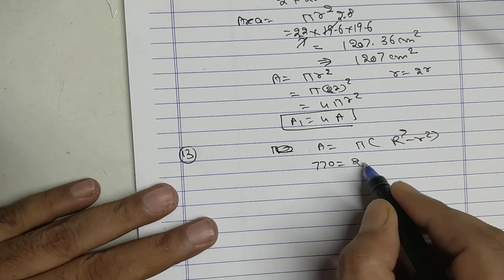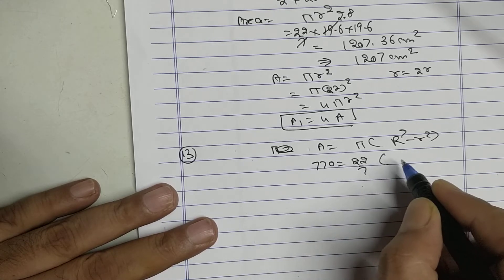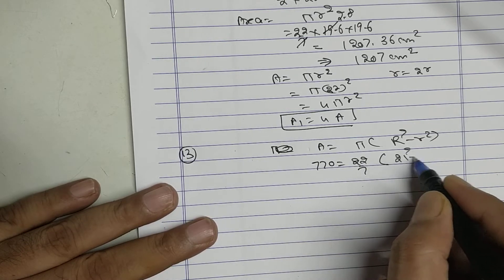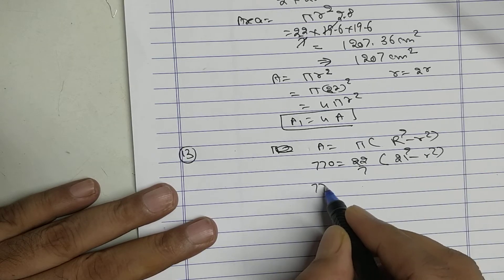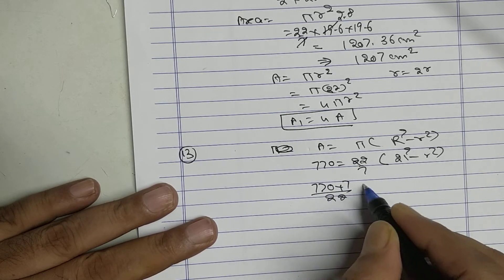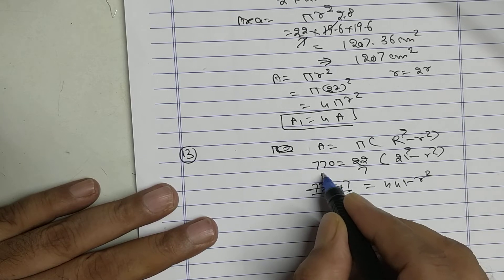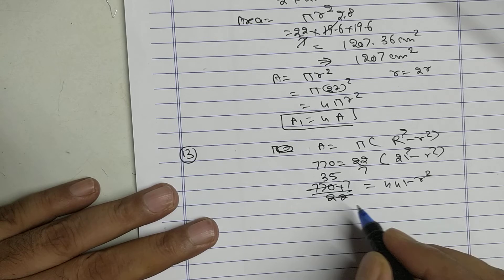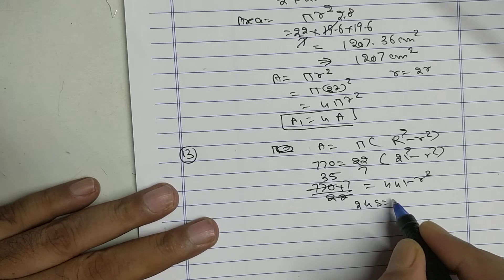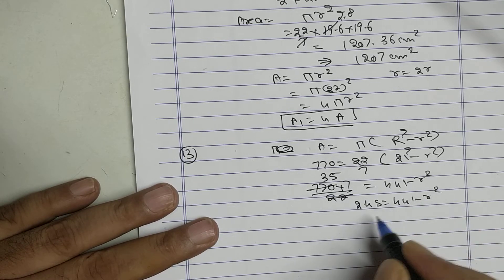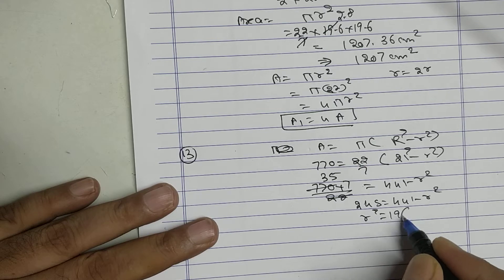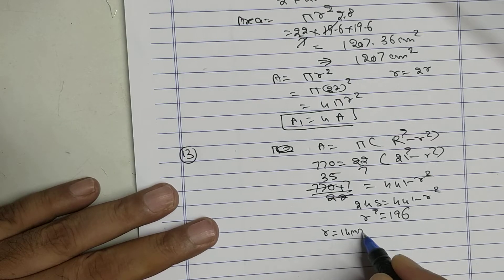22 upon 7, 21² minus r². 245 equals 441 minus r². r² is 196. So r equals 14 cm.